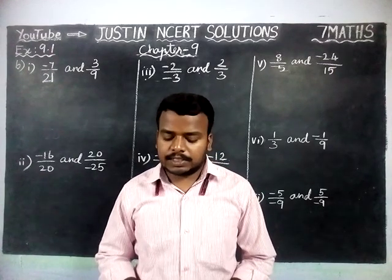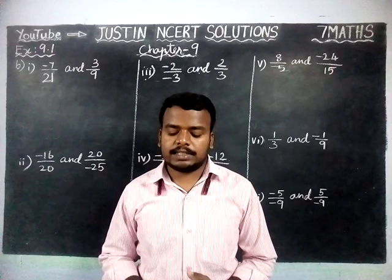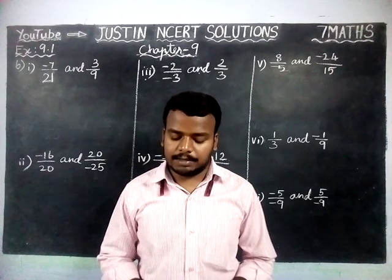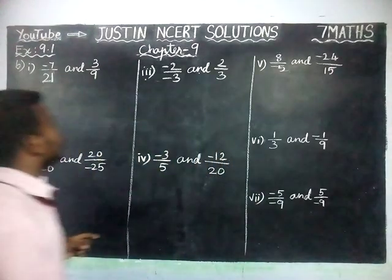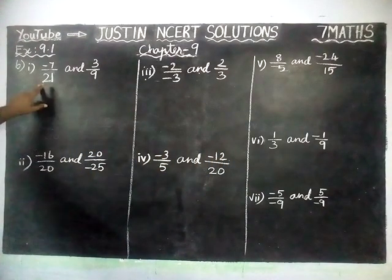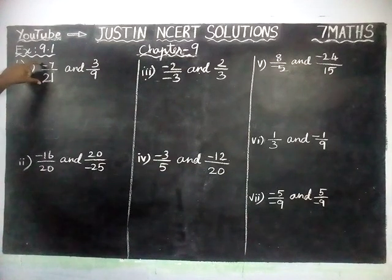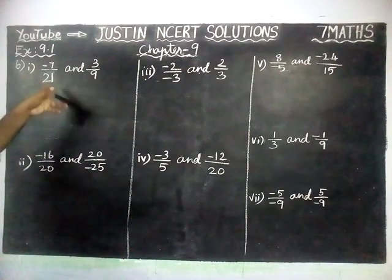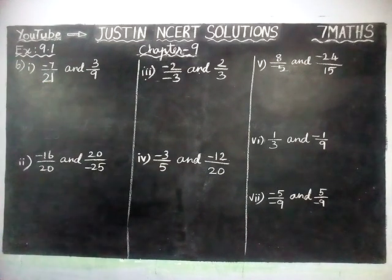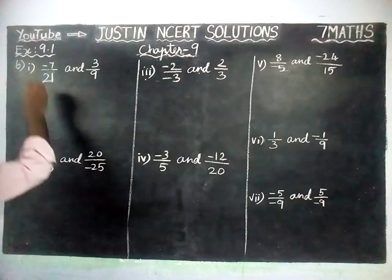The question is: which of the following pairs represent the same rational number? They have given pairs of rational numbers. We have to check it by using simplest form — we have to convert it into standard form, then check whether the two are equal. We will check it now.